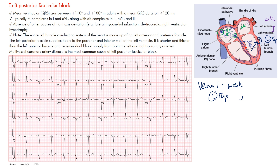Then there's a second vector going almost in the opposite direction — vector number two. This is a stronger vector and represents the majority of what we see. Vector two goes rightward and inferiorly. These two vectors are the main ones that make up the complexes we see in this block.